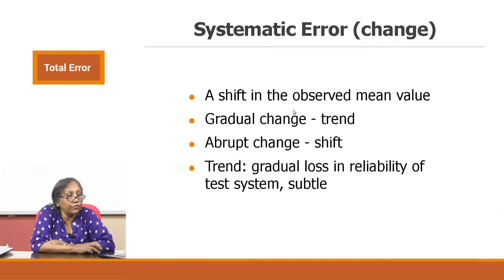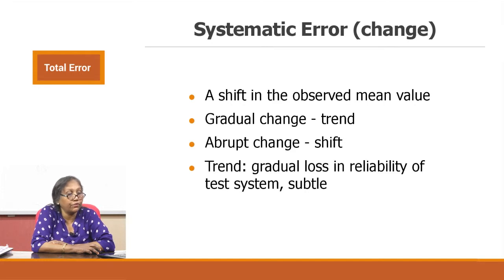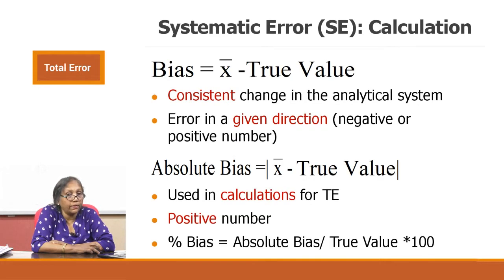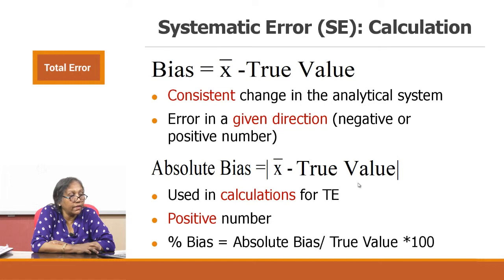Systematic errors are changes — a shift in the observed mean value. A gradual change is a trend and an abrupt change is a shift. A trend is a gradual loss in system reliability. Bias equals your lab mean minus true value; it is a consistent change with a direction — negative or positive — and must be used as a positive (absolute) number for total error calculation. Percentage bias is calculated as absolute bias divided by true value, multiplied by 100.